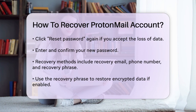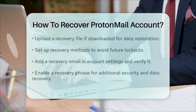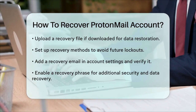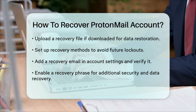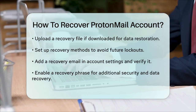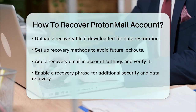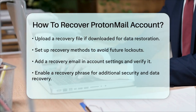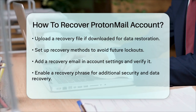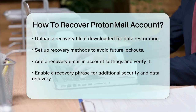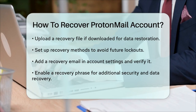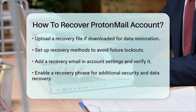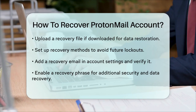Setting up recovery methods: To avoid getting locked out in the future, it's a good idea to set up recovery methods. To add a recovery email, log into your ProtonMail account, go to Settings, then All Settings, and scroll down to the Recovery section. Enter your recovery email address and save it — you'll need to verify it by clicking the verification link sent to you. To set a recovery phrase, go to the Recovery section in your settings, enable the recovery phrase, and you'll be given a 12-word phrase you can use to reset your password and decrypt your data.